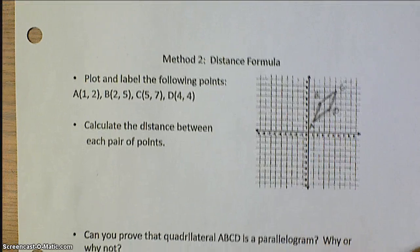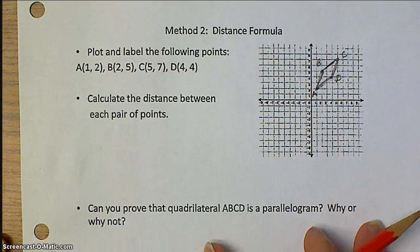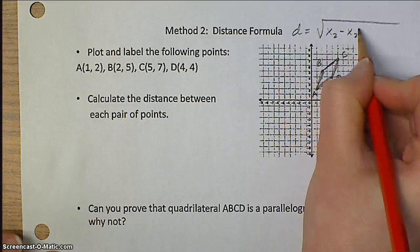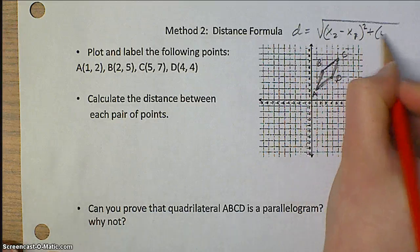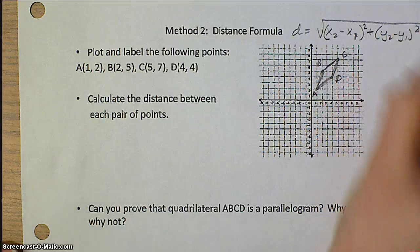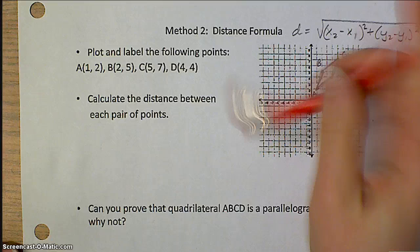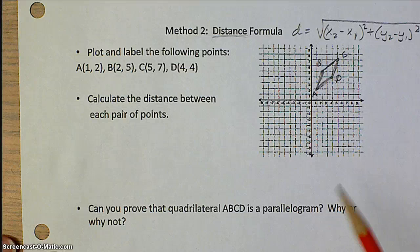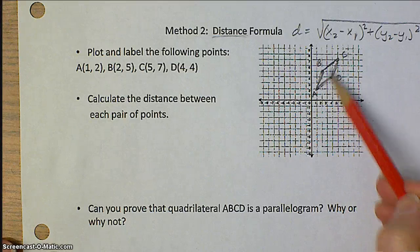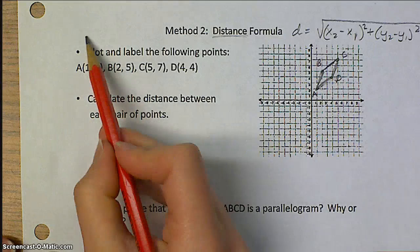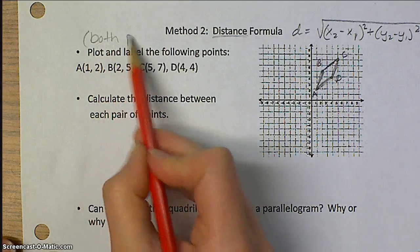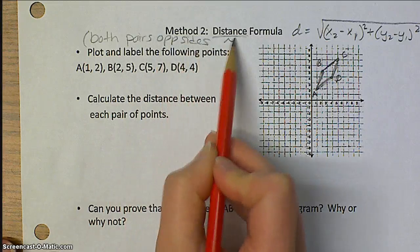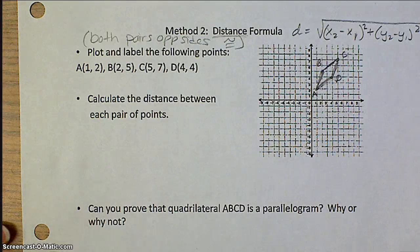Method 2 uses the distance formula. So we need to recap the distance formula. In case you forgot, this is it. And distance always tells us the length of something. Well, we know in a parallelogram that opposite sides should be the same length. They should be congruent. So we want to test this to see, are both pairs of opposite sides congruent? Are they the same length?